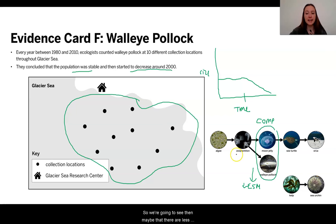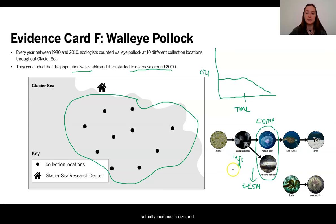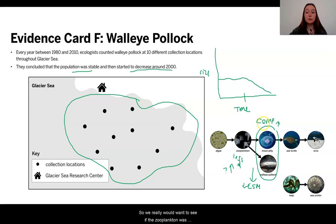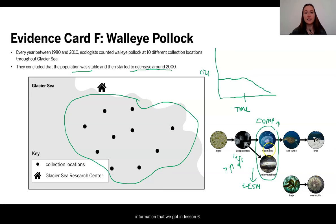So we're going to see, then, that there are less deaths in the zooplankton population. That could mean that the zooplankton population was able to actually increase in size and cause more energy to be available for our moon jellies. So we would really want to see if the zooplankton was having any changes during that time, and that was some information that we got in Lesson 6.